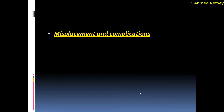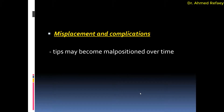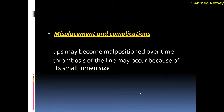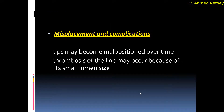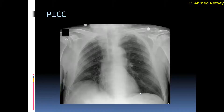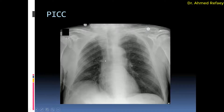Regarding malpositioning and complications: the tip may become malpositioned over time, and thrombosis of the line may occur because of its small lumen size. This example shows correct placement of a peripherally inserted central catheter — inserted through the left antecubital vein, going to the axillary and subclavian vein, left brachiocephalic vein, with its tip located in the region of the superior vena cava.